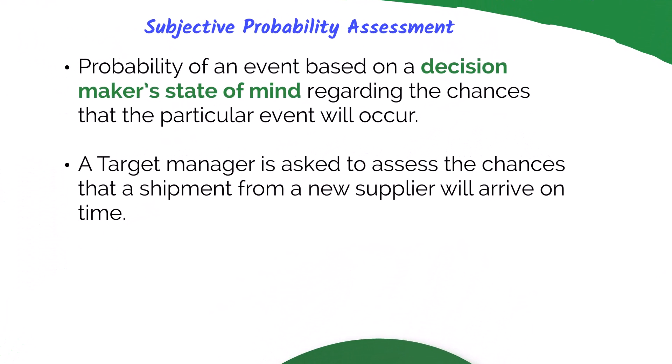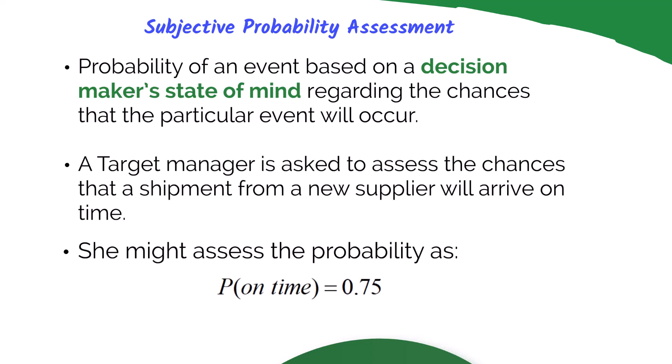The last type of probability assessment is subjective probability, based on the decision maker's state of mind — their opinion or expertise. For example, a Target manager is asked to assess the chances that a shipment from a new supplier will arrive on time. Using subjective probability, she might assess the probability at 0.75. This number comes from her experience and expertise — past experiences with suppliers or knowledge about the current supplier's reputation. Subjective probability can be more difficult to justify, but when data is not available, we need to rely on experts to make these estimates.